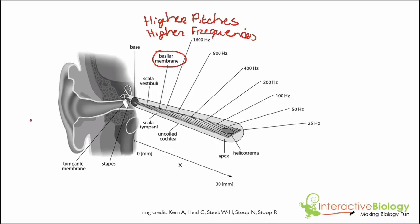If a certain sound comes into the air, it causes the tympanic membrane to vibrate, the malleus, incus, and stapes vibrate, and that causes the oval window to vibrate. That's going to cause fluid inside the cochlea to vibrate.